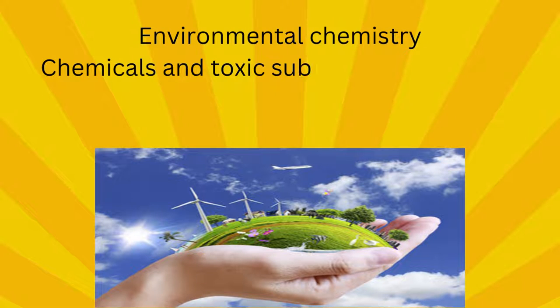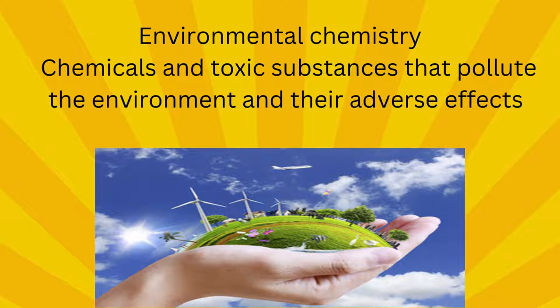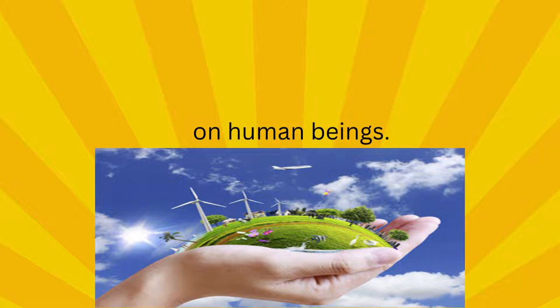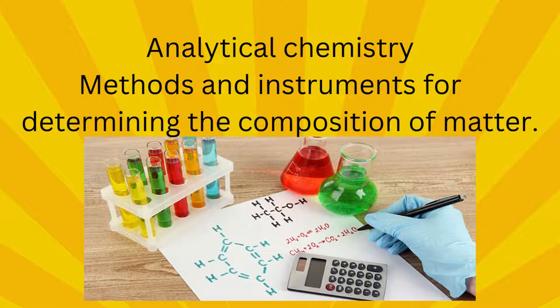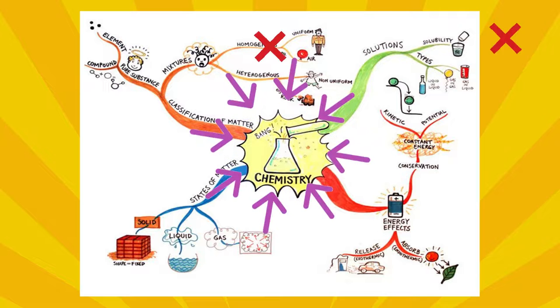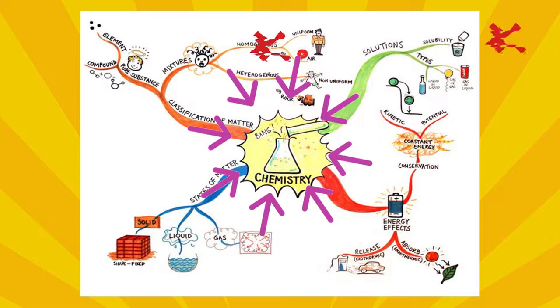Environmental chemistry: chemicals and toxic substances that pollute the environment and their adverse effects on human beings. Analytical chemistry: methods and instruments for determining the composition of matter. All branches of chemistry are interrelated to each other.